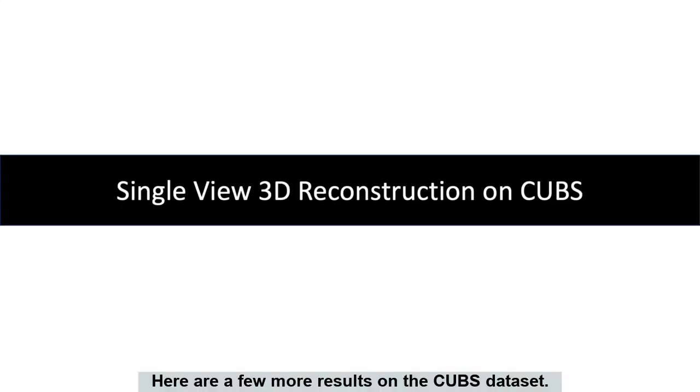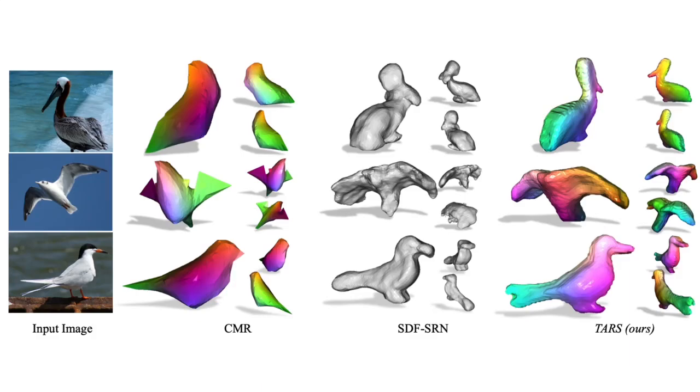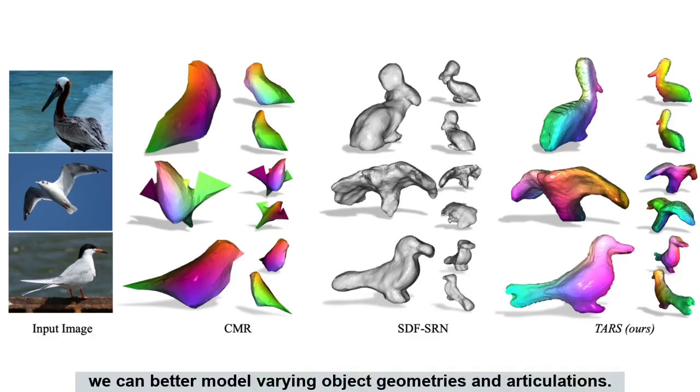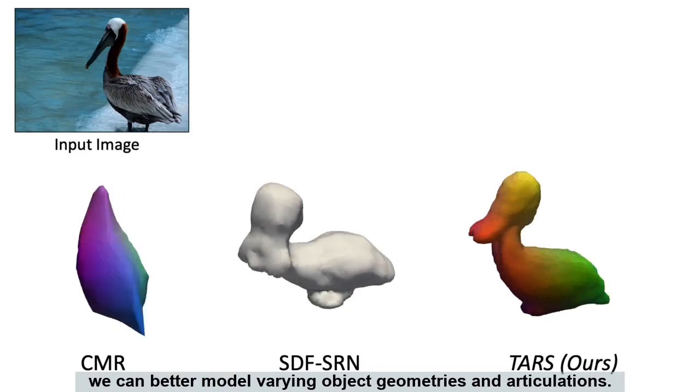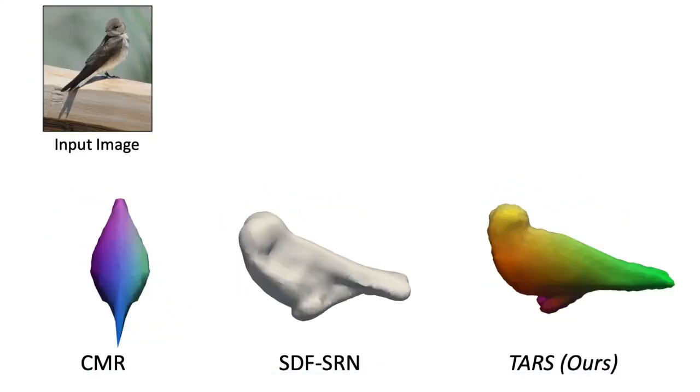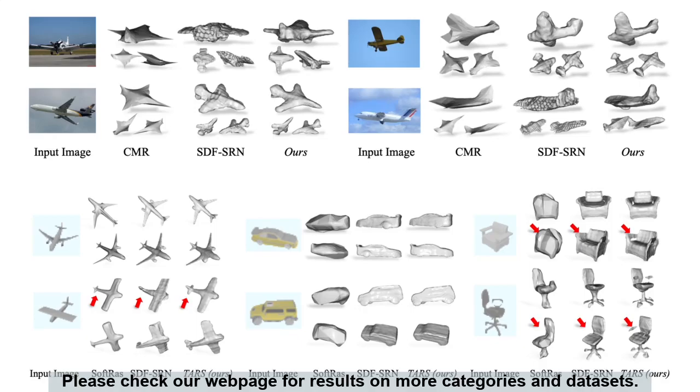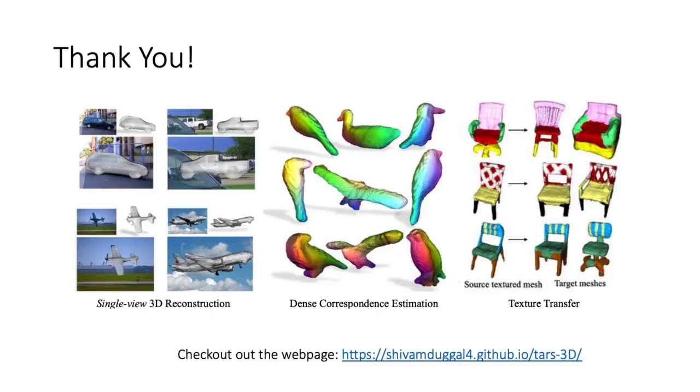Here are a few more results on the CUB dataset. Unlike prior works, we can better model varying object geometries and articulations. Please check our webpage for results on more categories and datasets. Thank you.